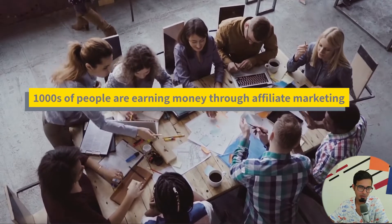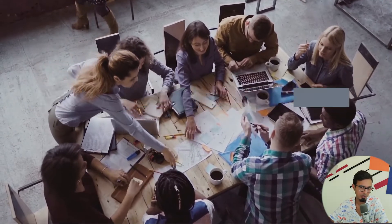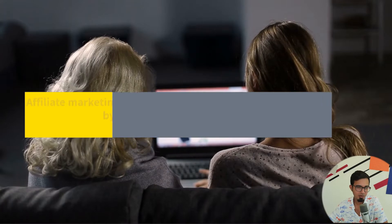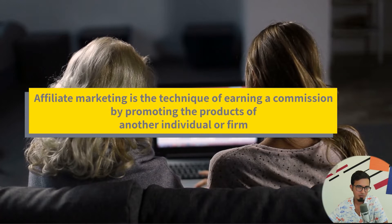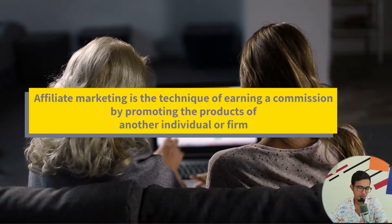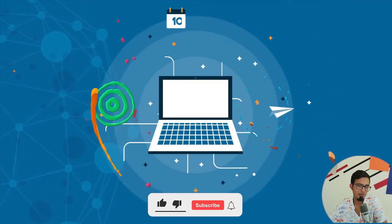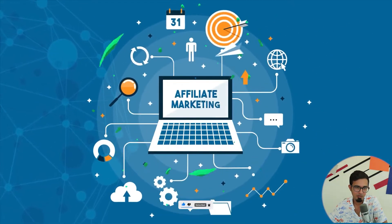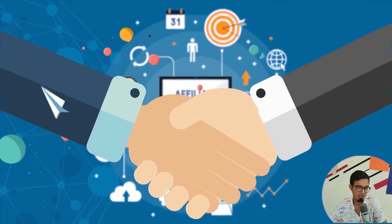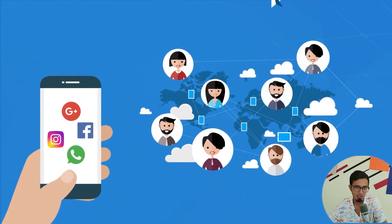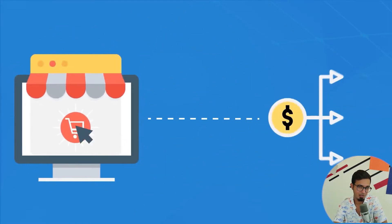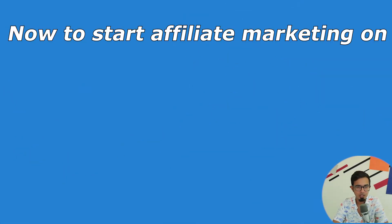Thousands of people are earning money through affiliate marketing, and in this video we're going to tell you how you can do that for yourself. Affiliate marketing is a technique of earning a commission by promoting the product of another individual, company, or firm. Affiliates simply find a product they like, promote it, and receive a portion of the proceeds from each sale they make. Affiliate connections from one website to another are used to track sales using cookies.